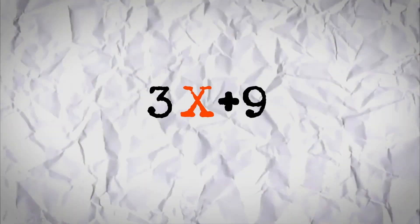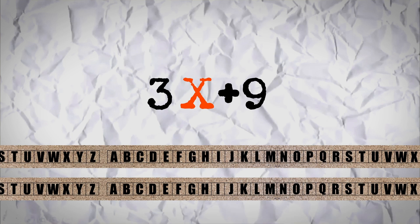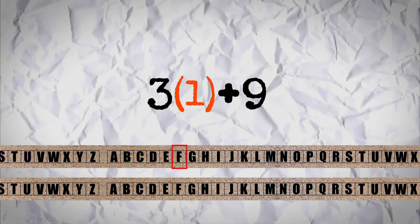Let's use a simple example to understand how ciphers work. Suppose the algorithm has the following rule: every letter in the word will be replaced by another letter equivalent to the value of 3x plus 9, where x is the place value of the letter in the alphabet, and the letters are counted in a circular fashion — also known as the modulo rule. Going by this rule, A has a place value of 1 and F has a place value of 6.